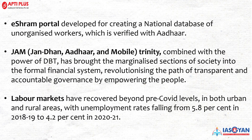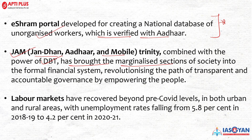The E-Shram portal was developed to create a national database for unorganized workers, verified with Aadhaar — a very important step by the Government of India. The JAM Trinity — Jan Dhan, Aadhaar, and Mobile — combined with Direct Benefit Transfer (DBT) has brought the marginalized section of society into the formal financial system, paving the way for transparency, accountability, and empowering governance. Beneficiaries can now directly receive benefits in their individual accounts, curbing corruption significantly.